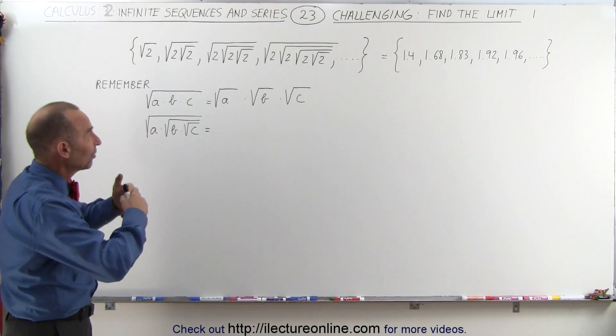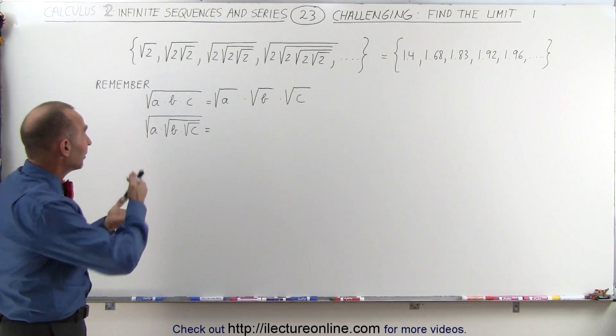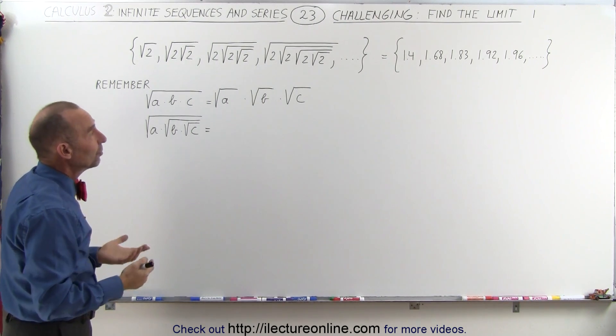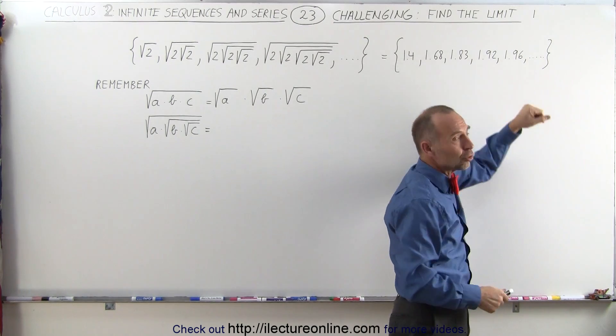Now, what does that converge to if it converges at all? Well, we can take a calculator and start calculating each of these individual elements of the sequence, and you can see that it does appear to be converging to 2,